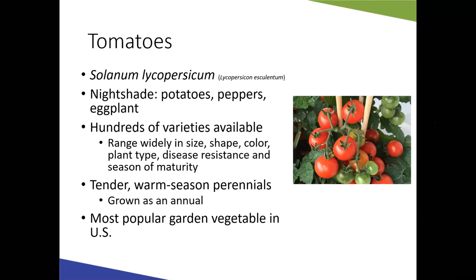If you look through a catalog, there are hundreds of different tomato varieties available. They come in all different sizes, from cherry tomatoes to large slicing tomatoes that can get two to three pounds when fully grown. Different shapes too — round cherry tomatoes, grape tomatoes, oval sauce tomatoes, oblong beefsteak types. Colors range from red to yellow, orange, purple, and some varieties remain green even when ripe.